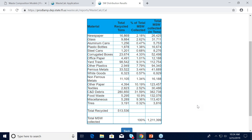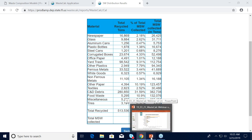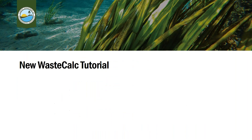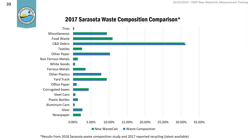Toggling back to the presentation: the blue line represents Sarasota County's actual waste composition and the green represents results from the new Waste Calc. They match up well because Sarasota's waste composition study was used in the development of Waste Calc. The other nine counties with waste composition studies will show similar results. For counties without waste composition studies, we expect the results to be accurate, but there is no available data to compare against.